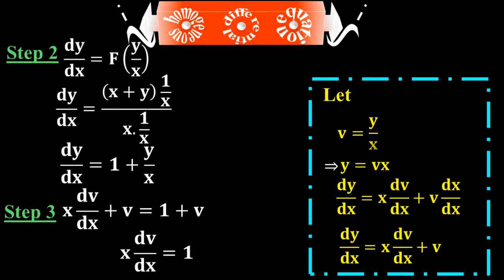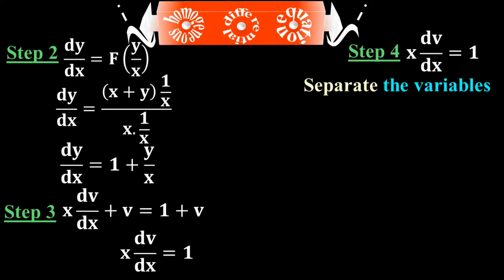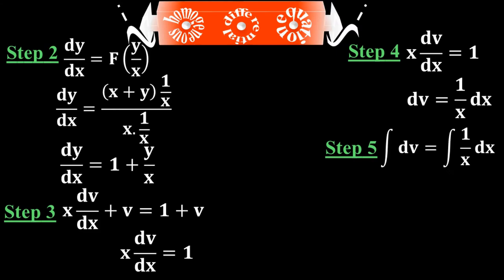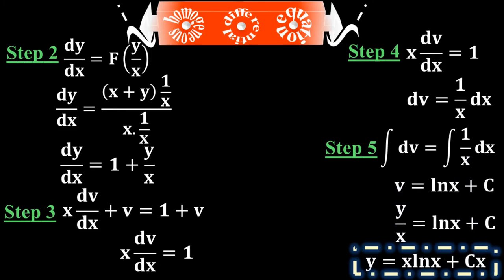Step 5 — integrate both sides: ∫dv = ∫(1/x)dx, giving v = ln|x| + c. Substituting back v = y/x gives the final answer: y = x·ln|x| + cx.